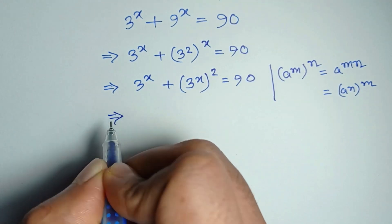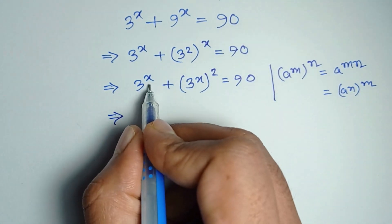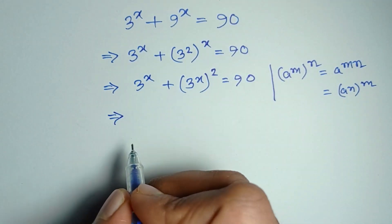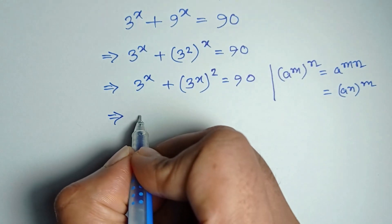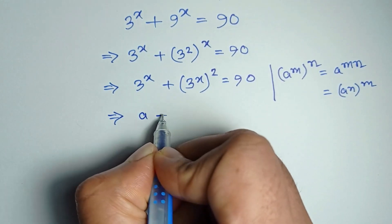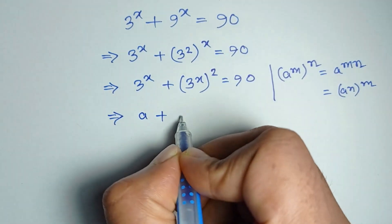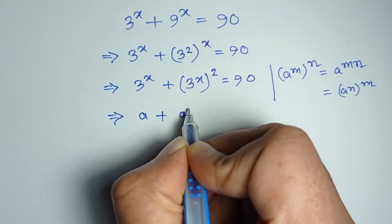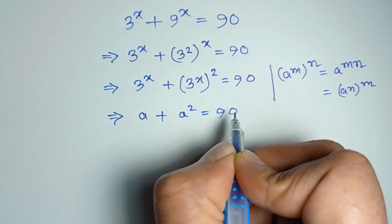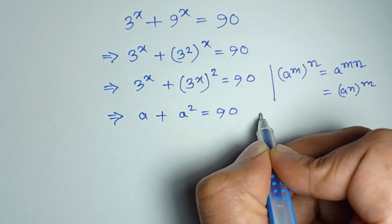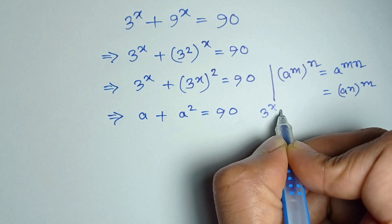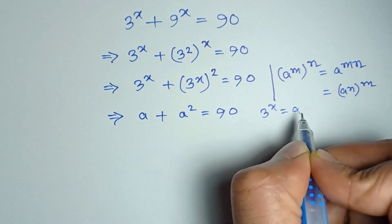If we put 3 to the power x as a, then we get a plus a squared is equal to 90. Here, 3 to the power x is equal to a.